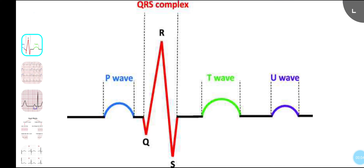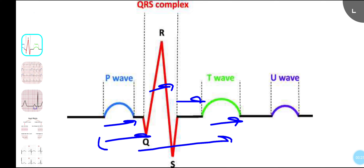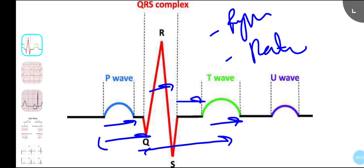Welcome to my YouTube channel. Today's video is about the ECG — how to read an ECG and what approach you need to apply when looking at one. Whenever you have an ECG, you know there's a P wave, QRS, PR interval, ST segment, T wave, and QT interval. Along with that, you need to remember the rhythm, rate, and axis.